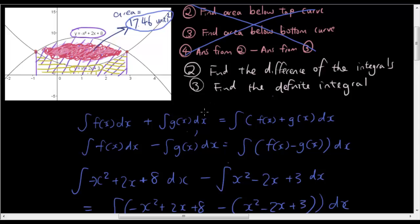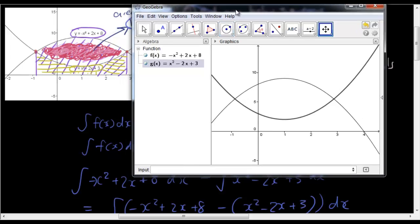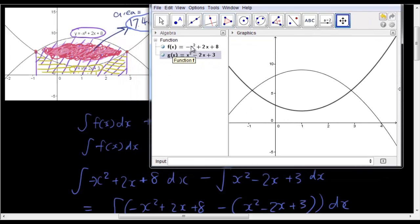I just want to show you guys what happens if the x-axis cuts the area that we're trying to find. So let me just quickly draw a new graph. So as you can see, I've just drawn the same graphs in GeoGebra. So the first equation is at the top, and the second equation is at the bottom.